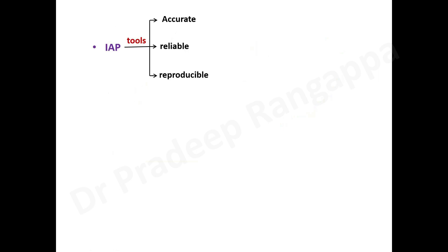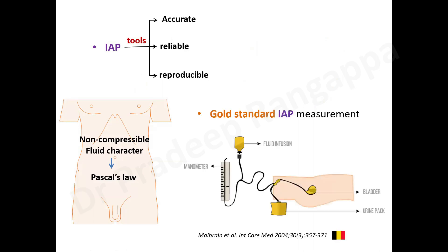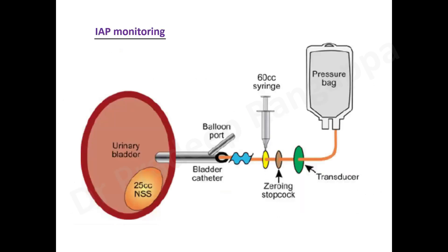The tools to measure intra-abdominal pressure must be accurate, reliable, and reproducible. Since the abdomen is non-compressible, Pascal's law applies. The gold standard is vesicle (bladder) pressure — intravesicle pressure is a well-validated surrogate of intra-abdominal pressure. Measurement is simple: connect a three-way to the Foley catheter, transduce to the pressure transducer, infuse 25 cc of saline into the bladder, close the outlet, and read the pressure.